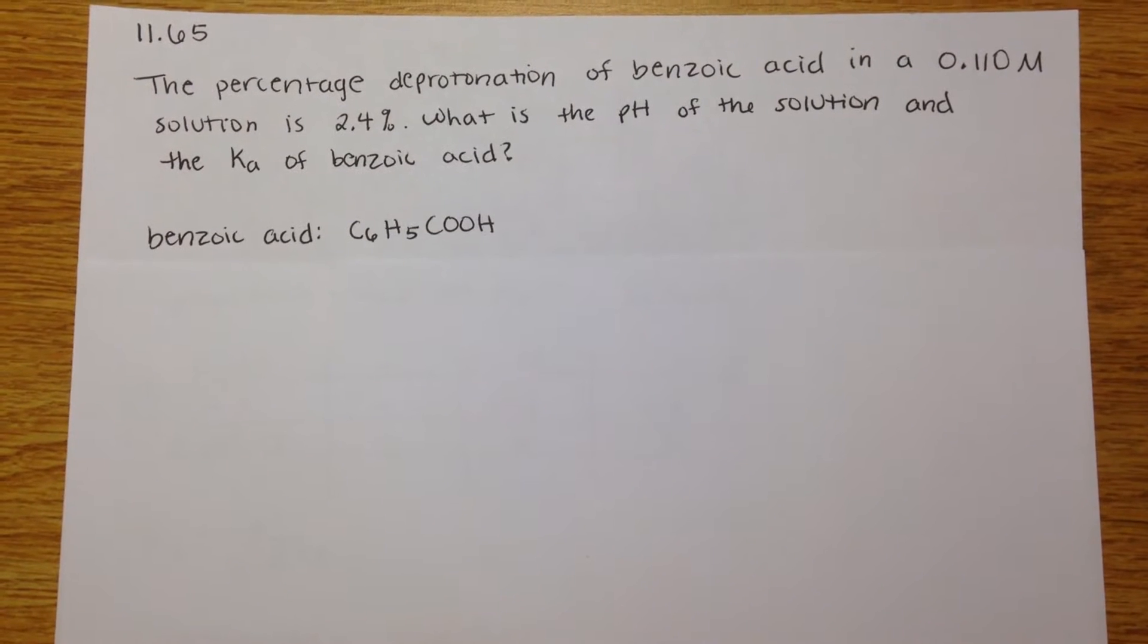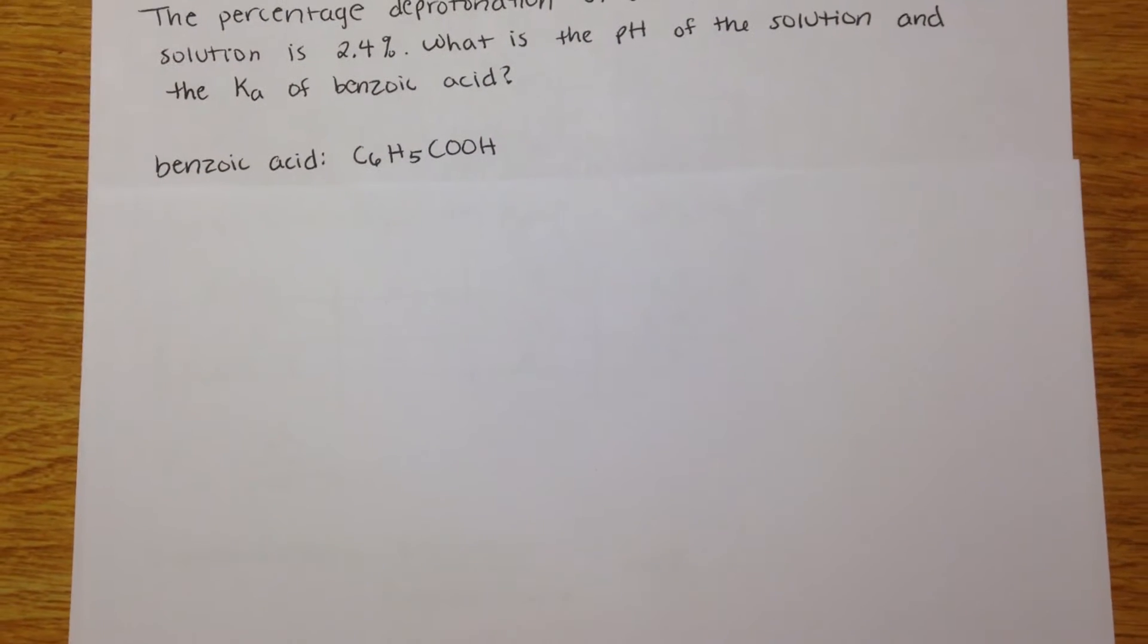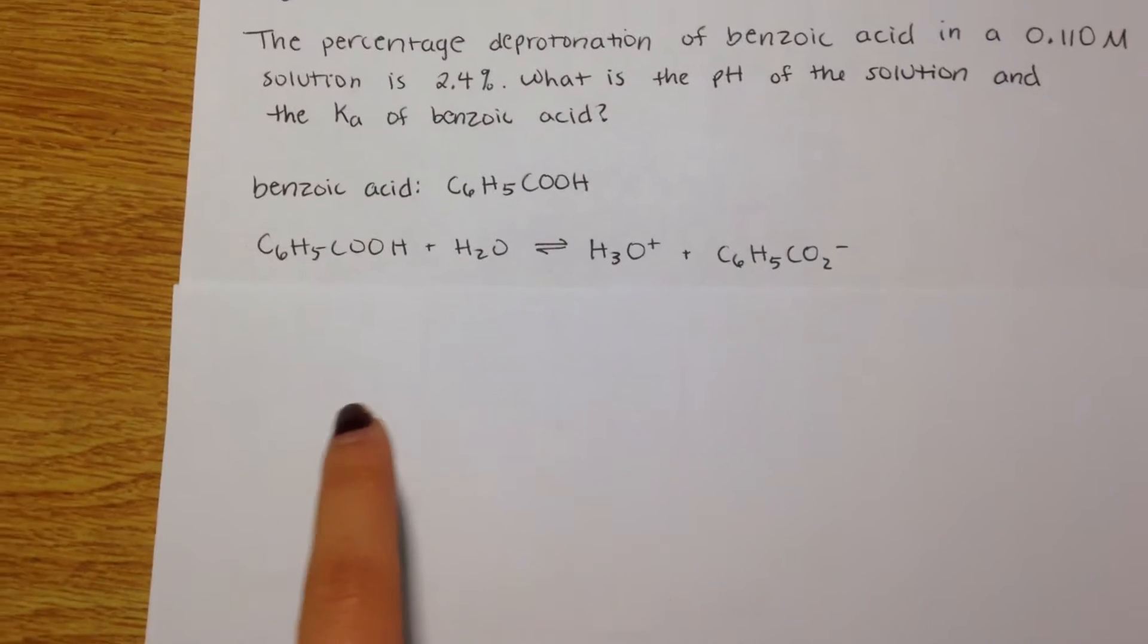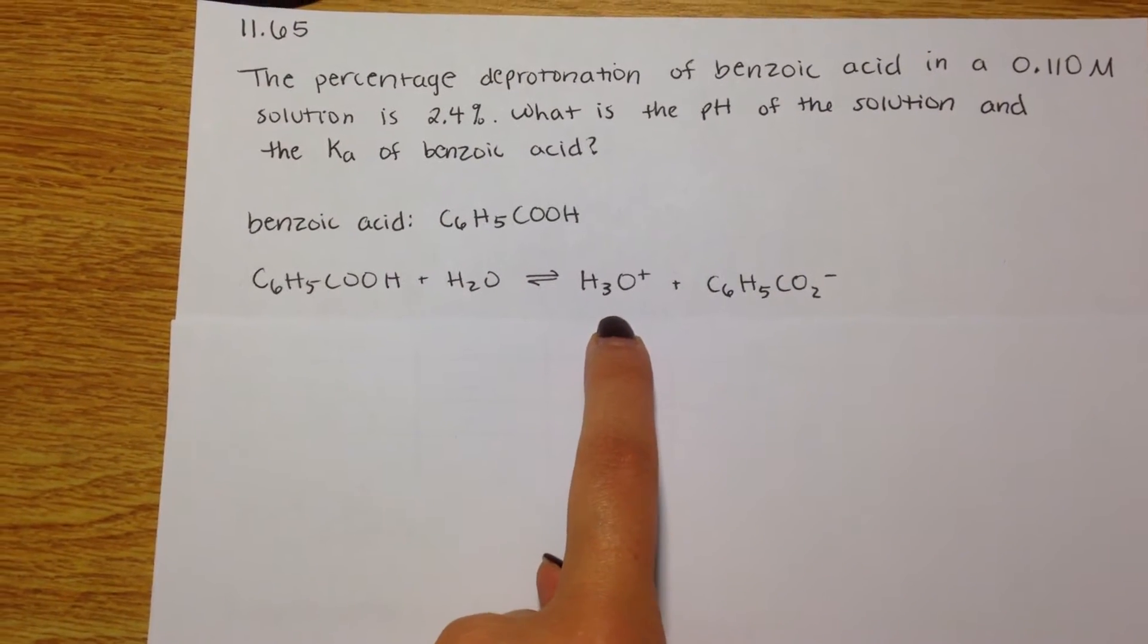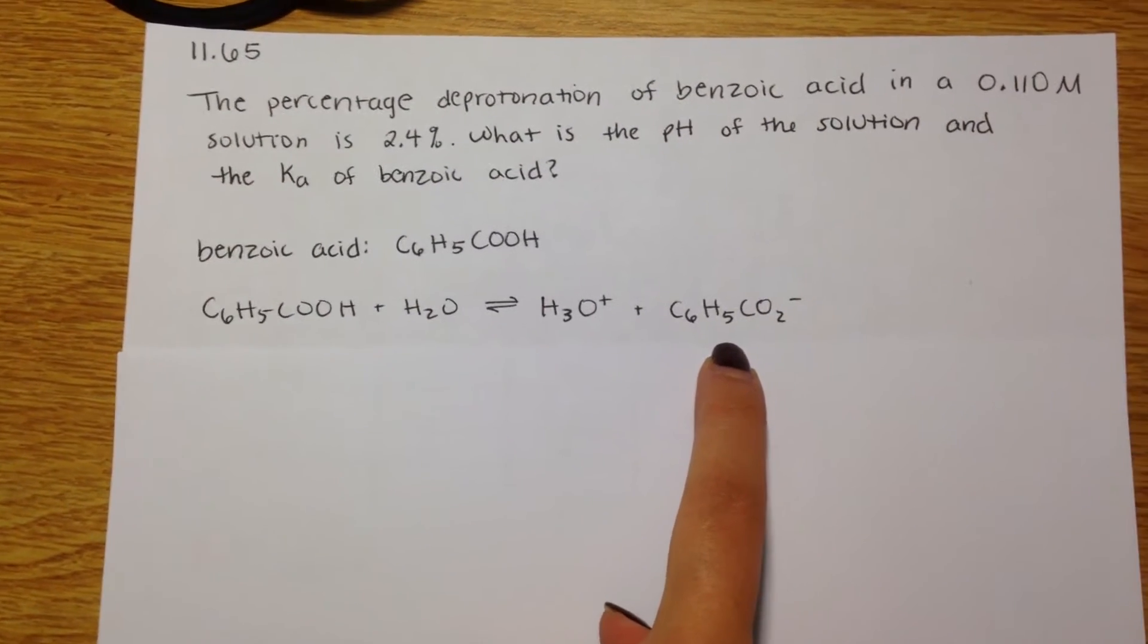So here's benzoic acid, and here is the equation with the acid plus water leading to hydronium ions and the conjugate base.